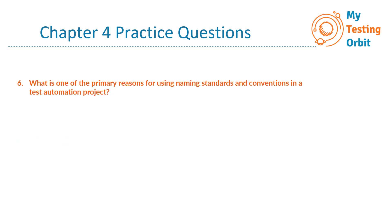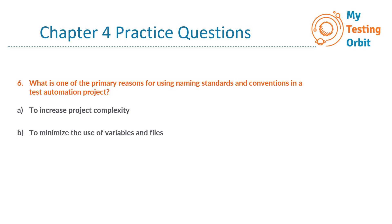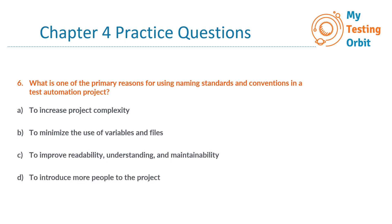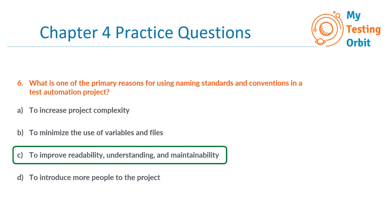Question number 6: What is one of the primary reasons for using naming standards and conventions in a test automation project? A. To increase project complexity. B. To minimize the use of variables and files. C. To improve readability, understanding, and maintainability. Or D. To introduce more people to the project. The correct answer is C. Naming standards and conventions are used to make the TAS code and test suite easier to read, understand, change, and maintain. Options A, B, and D do not accurately reflect the primary purpose of naming standards.